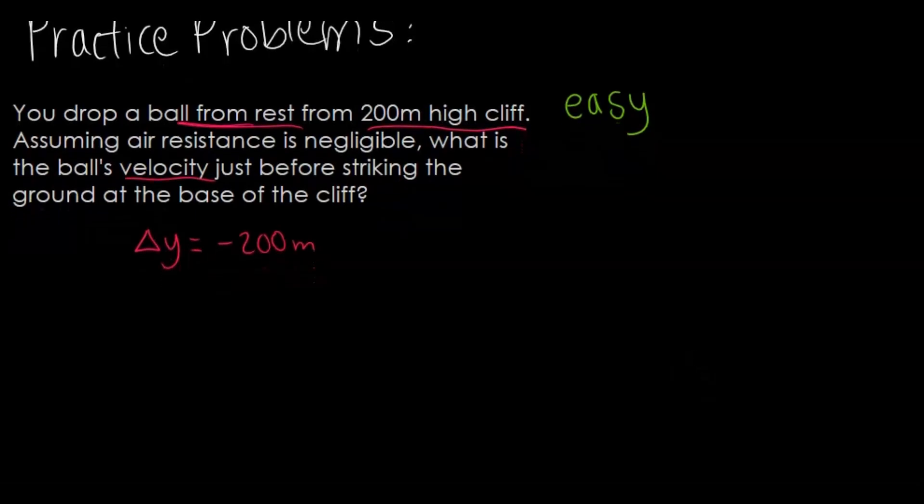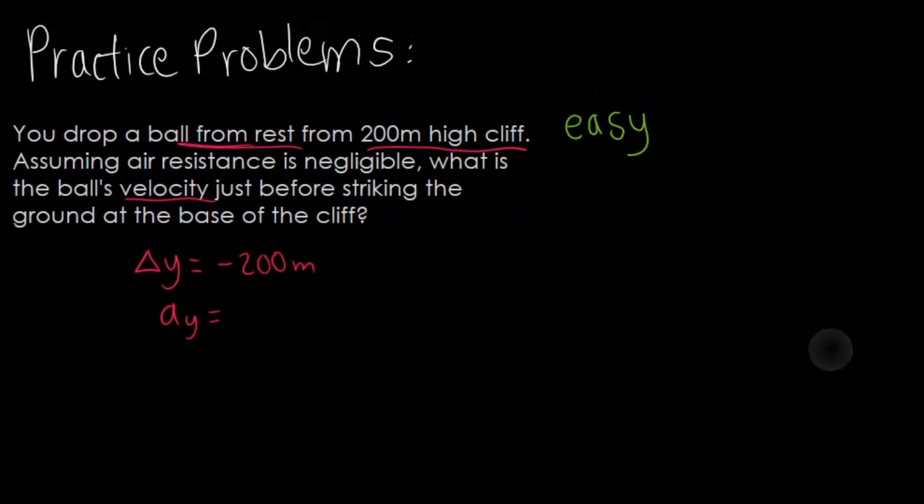The next thing I want to take note of is the acceleration in the y direction. Since this is a ball we're just dropping from rest from a cliff, it's going to be in free fall. Any object in free fall on Earth is going to experience a gravitational constant of negative 9.8 meters per second squared. Another thing is it's dropped from rest, so the initial velocity is just going to be zero meters per second.